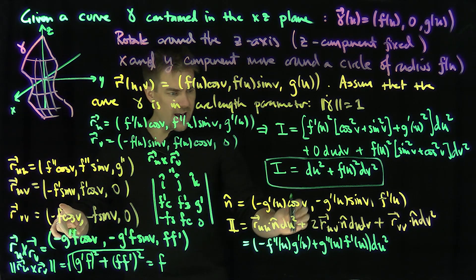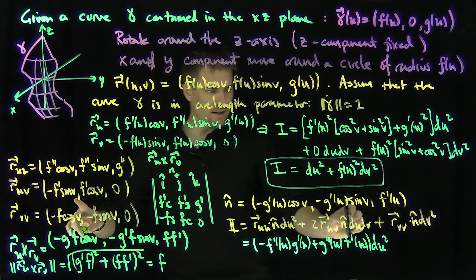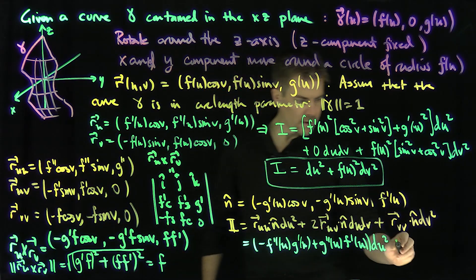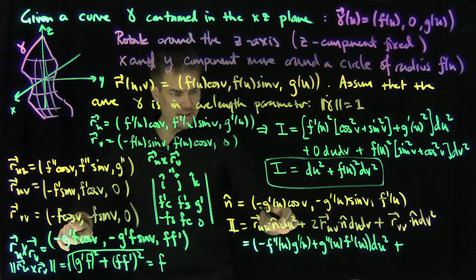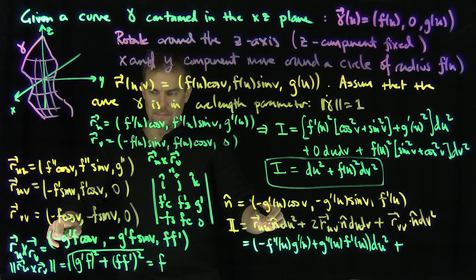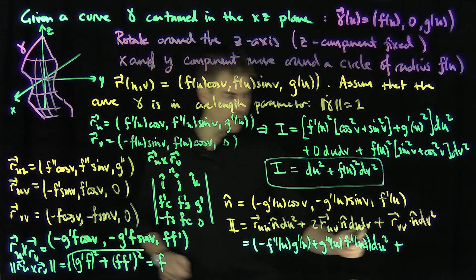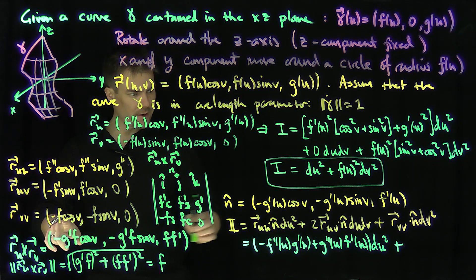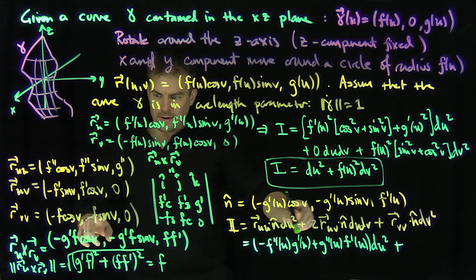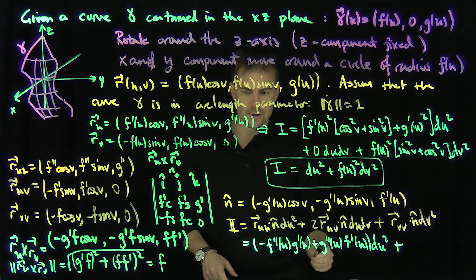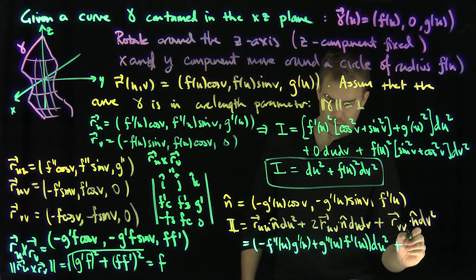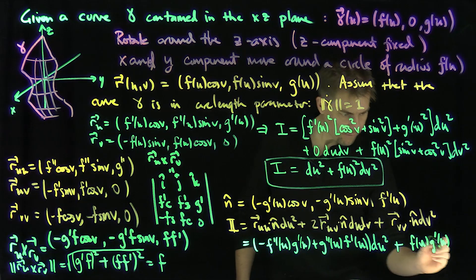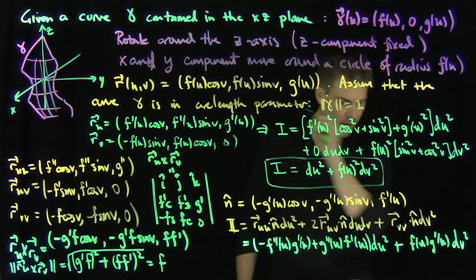For r_uv · n̂: we get +f'g'sin(v)cos(v) - f'g'sin(v)cos(v) + 0, so the cross terms vanish. For r_vv · n̂: we get +fg'cos²v + fg'sin²v = fg'(u). So the second fundamental form is (g''f' - f''g')du² + 0·du dv + f(u)g'(u)dv².